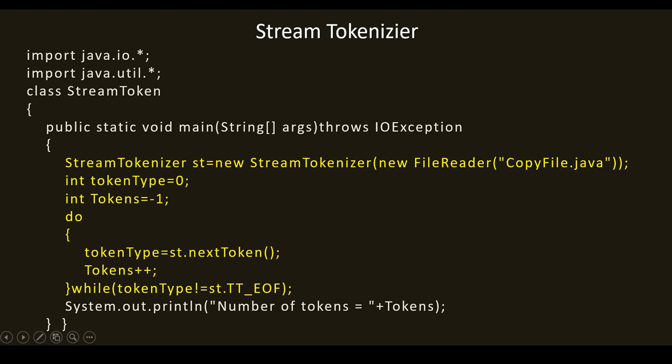In the do-while loop, tokenType is set to st.nextToken(). It takes tokens one by one, stores them into tokenType, and immediately increments the count — from minus 1 it becomes 0 for the first token. The while condition checks: while tokenType is not equal to st.TT_EOF. TT_EOF is the field in stream tokenizer that checks for end of file. It returns minus 1 when no more tokens are available, at which point the while loop stops.